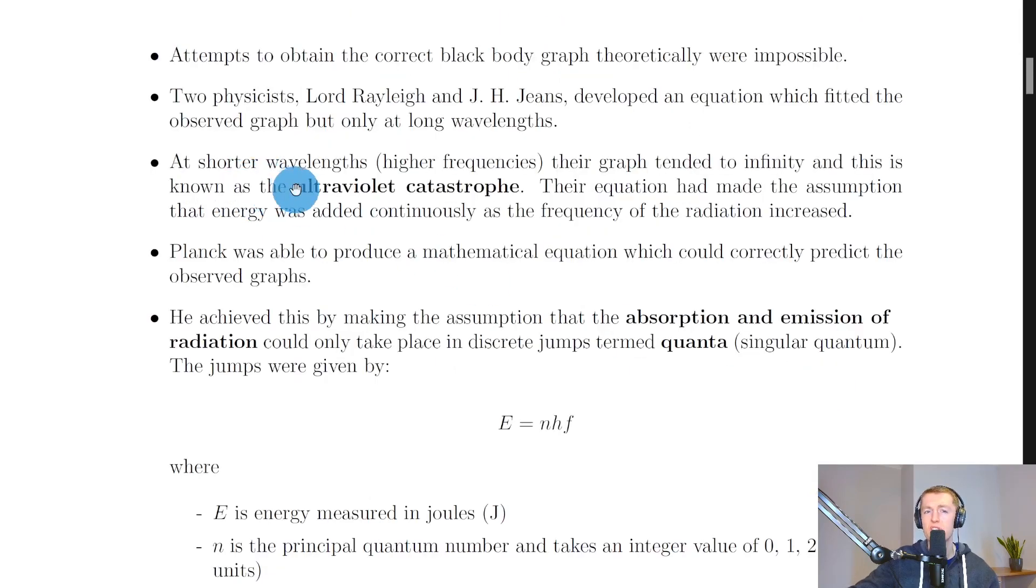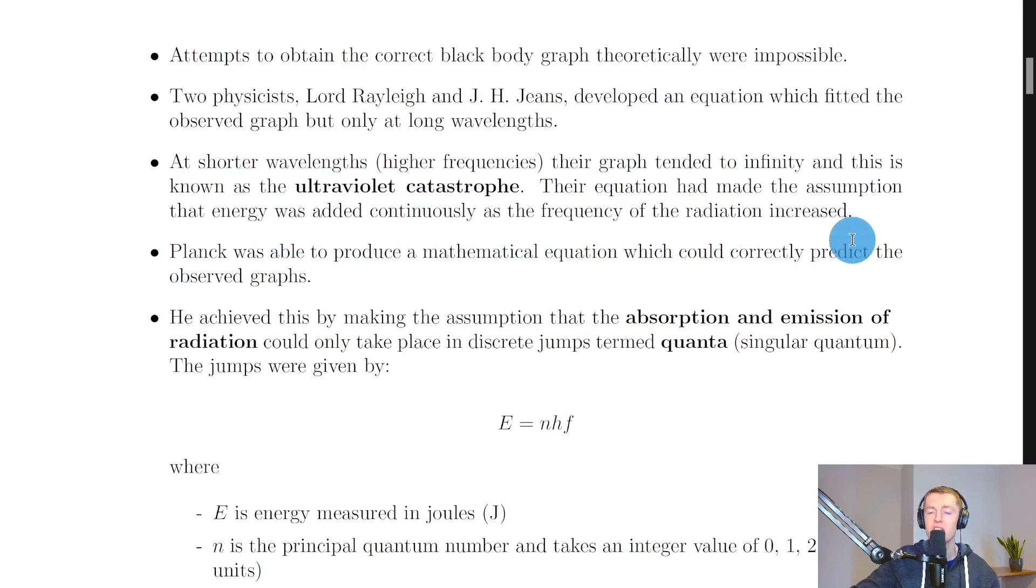At shorter wavelengths, i.e. higher frequencies, the graph tended to infinity and this is known as the ultraviolet catastrophe. Their equation had made the assumption that energy was added continuously as the frequency of the radiation increased. Here's the observed graph and here's the graph predicted by the equation produced by Rayleigh and Jeans.